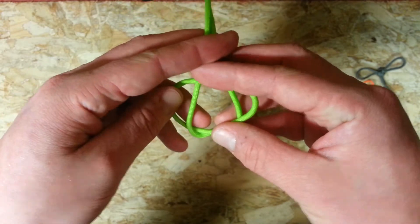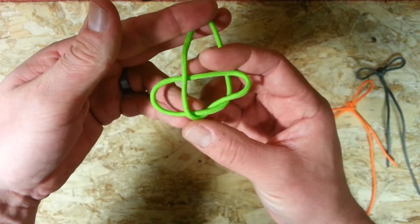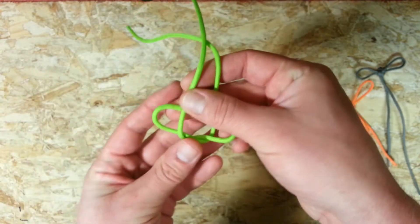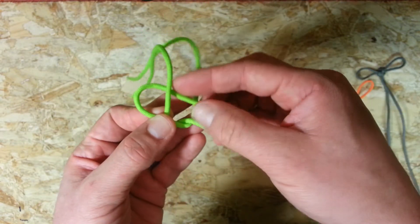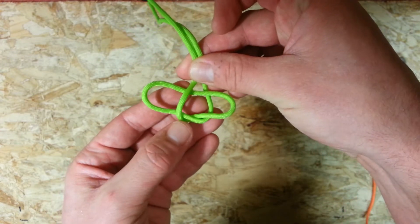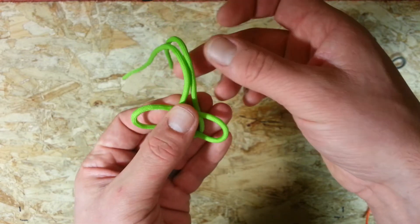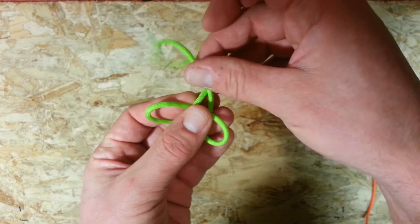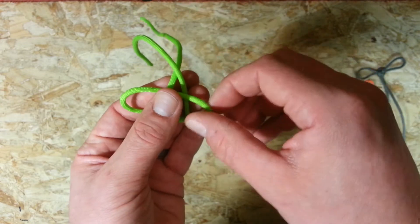And we're going to take our left hand working end and come up in front. So you should have something that looks like that. It should look like that. So you have a cross at the bottom there. You have the two ears of your bow already forming. So once we're up at the top here we're just going to cross our working ends. So the one that's currently behind comes in front of the other one.